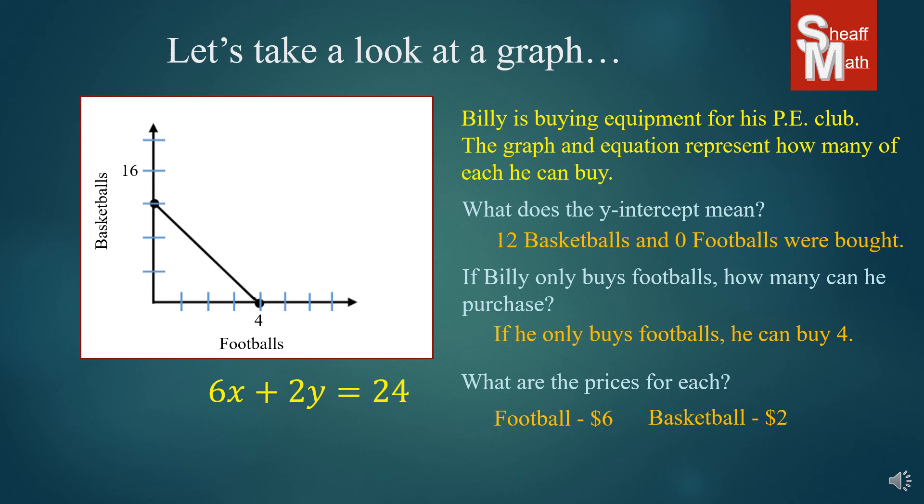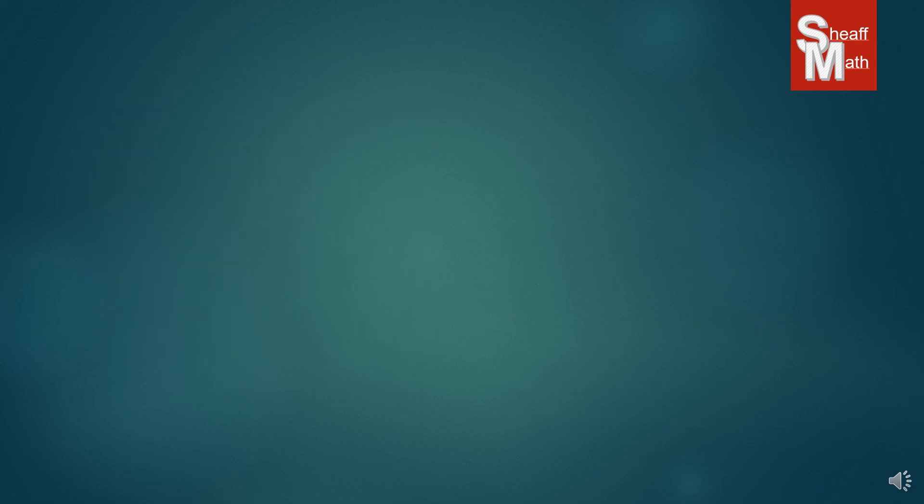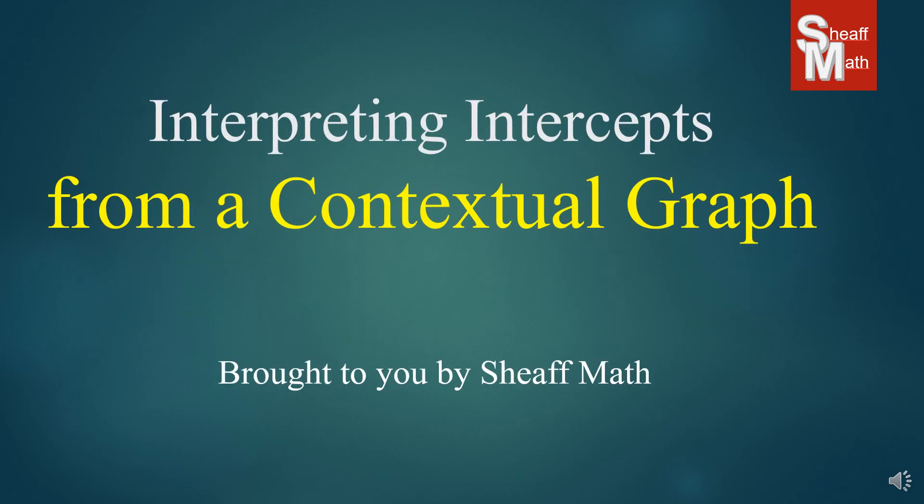So this isn't a particularly easy problem to do. There's a lot of things that you have to look at, but I want to encourage you to really focus on these graphs and study them and read the context and look at the equation. They all give a little bit of information about each. Well that was just a short video. My students are doing it in their class and if this helps anybody else that would be great. So you just learned how to interpret intercepts from a contextual graph. Thank you and we'll see you next time.